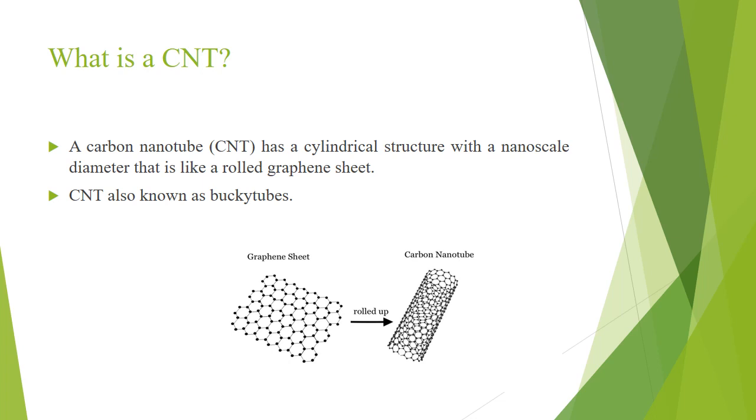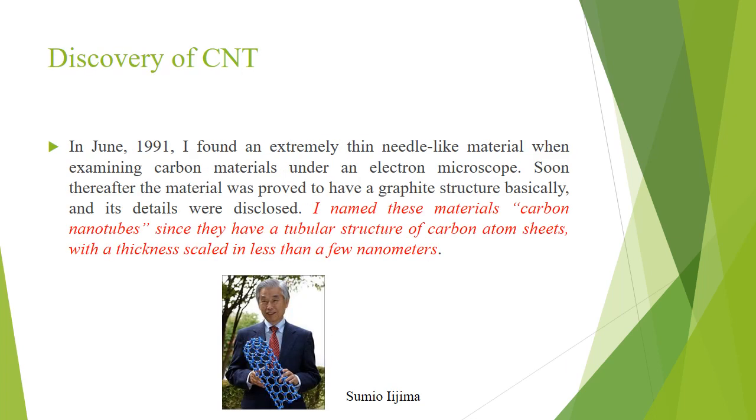Here you can see this graphene sheet and this carbon nanotube is formed by the rolled up structure of this graphene sheet. And this carbon nanotube is discovered by the scientist Sumio Iijima.